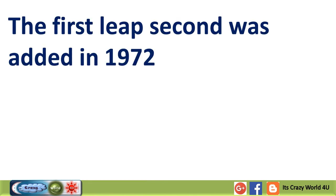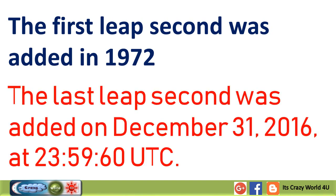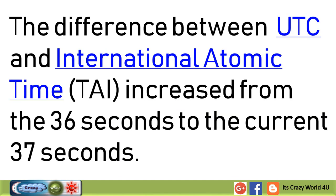The first leap second was added in 1972. The last leap second was added on December 31, 2016, at 23:59:60 UTC. With that addition, the difference between UTC and International Atomic Time increased from 36 seconds to the current 37 seconds.